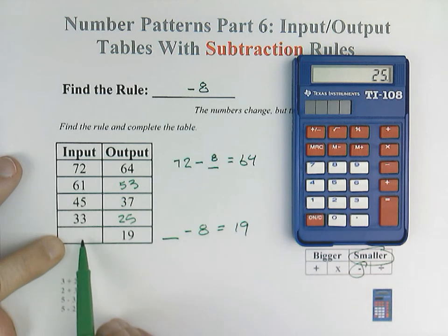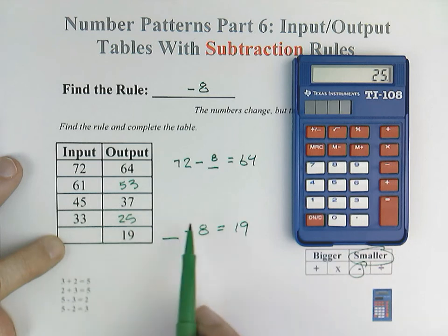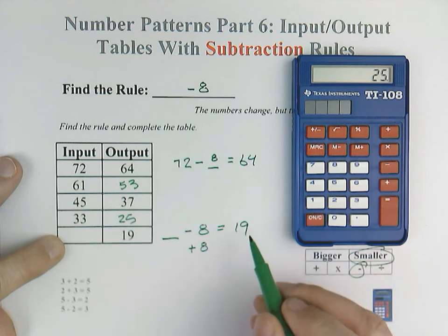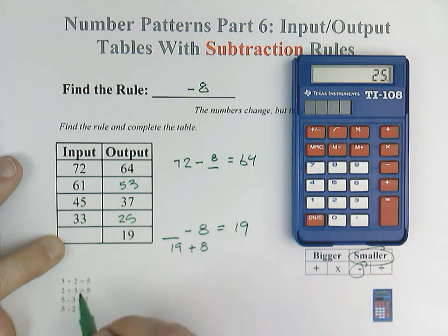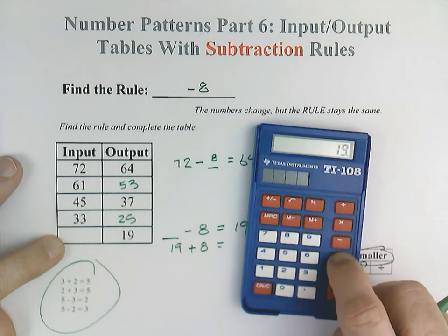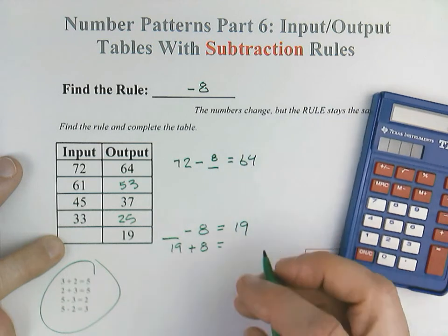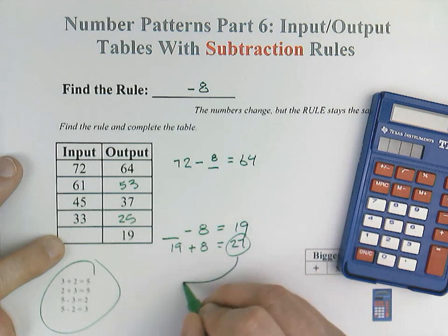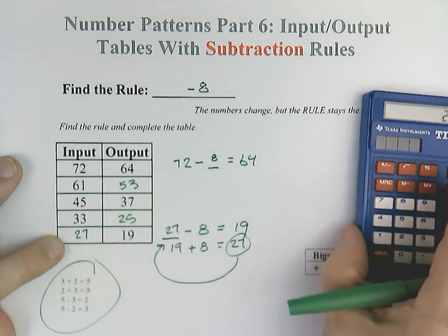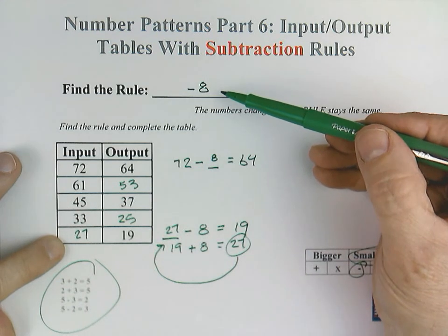But remember, on this one, instead of working from the left to the right and subtracting, we're working opposite. We're going from the right to the left. So the opposite of subtraction would be addition. We are adding 8 this time, and we're going to take our 19. Remember, we can do that because of fact families. 19 plus 8 equals 27. And in fact families, if it's 27 here, it means it's 27 there. So our last number, our input output table is 27 using a rule of minus 8.